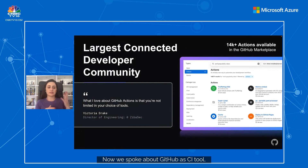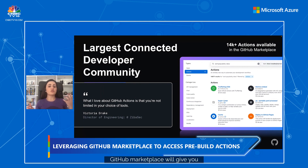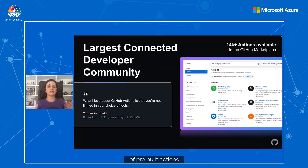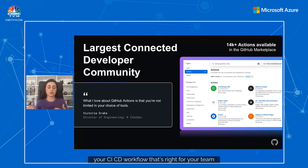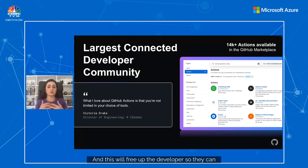GitHub is the home of open source, so you can leverage the GitHub Marketplace. The GitHub Marketplace gives you and your organization access to tens of thousands of pre-built actions from trusted verified partners like Azure, plus hundreds more from the open source community, making it super easy to build your CI/CD workflow without having to start everything from scratch. Actions go beyond CI/CD — you'll find lots of different actions that streamline any process within your developer workflow, freeing up developers to focus on delivering value rather than performing manual tasks.